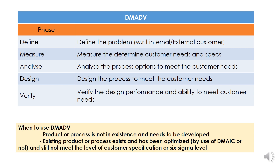Now let's look at DMADV. The Define phase involves problem definition or customer requirements with respect to internal and external customers. In the Measure phase, we measure the current state and identify customer needs and specifications. In the Analyze phase, we analyze the best process option to meet the customer need output.